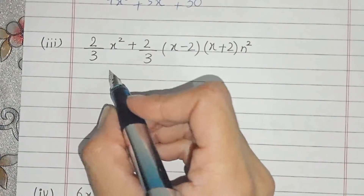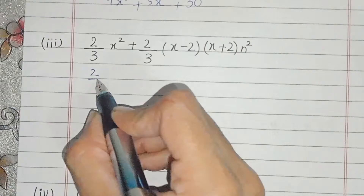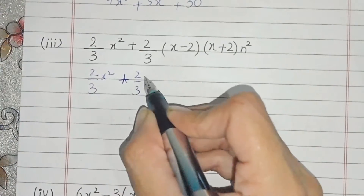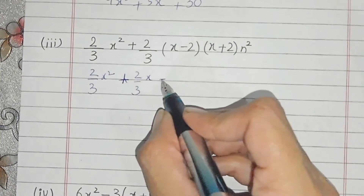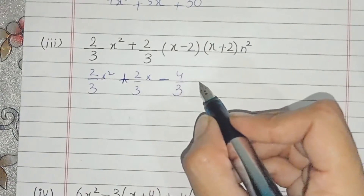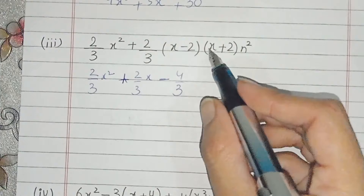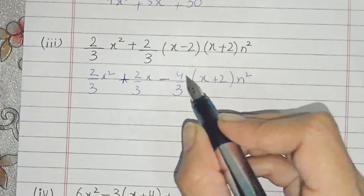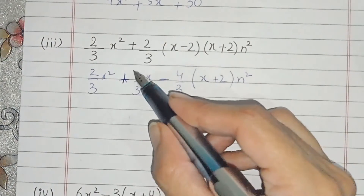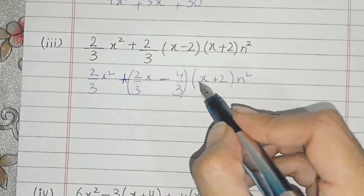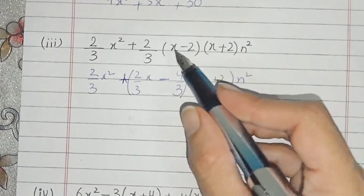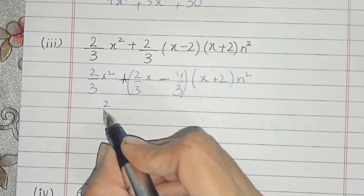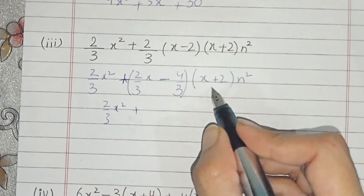Now question number 3. We have to solve this with a fraction: 2/3x. We get 2/3x and multiply it. Plus, minus, minus gives 4x over 3. We are going to multiply — not 2/3 by 3 — but 2/3x plus 2/3x, then multiply by plus minus 4x.